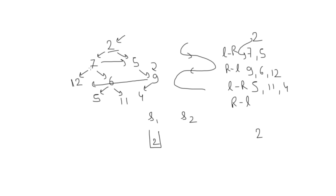What I mean is: I will remove the element, print it, and check if it has any right element — if yes, put it in the stack. Then just put the left as well. So after popping an element, we push right first then left into the stack.